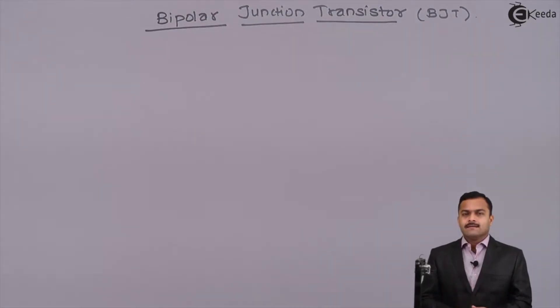Why is it called transistor? For amplification purposes, we are passing a signal through a low resistance path to high resistance path. That means we are transferring a signal from low resistance to high resistance.